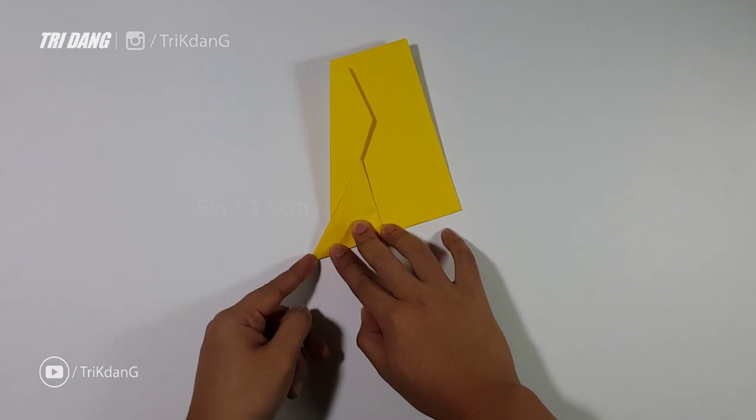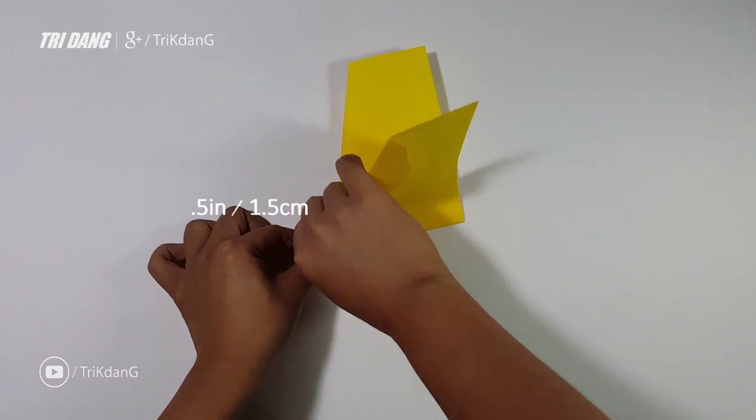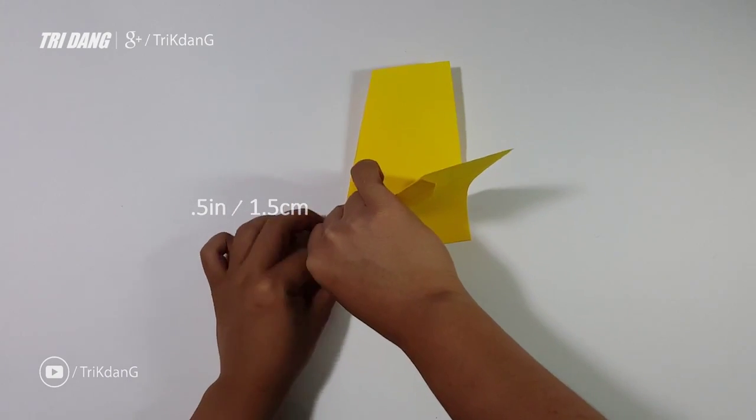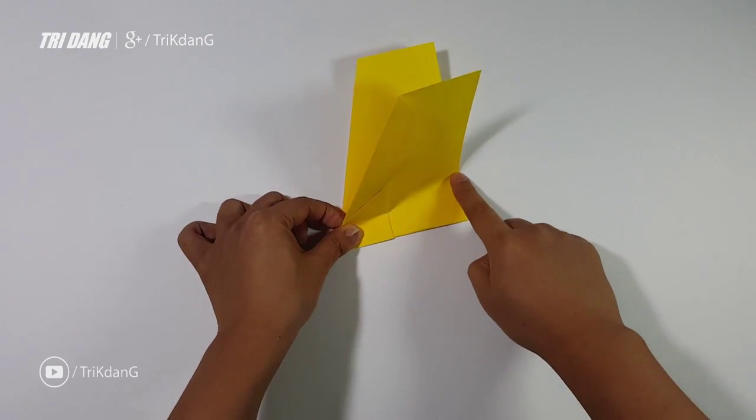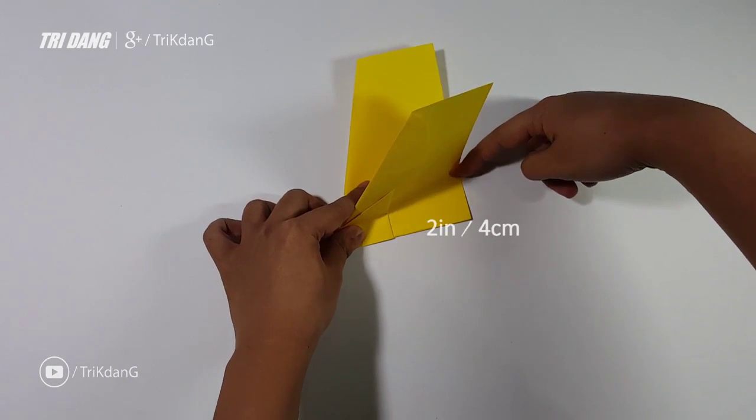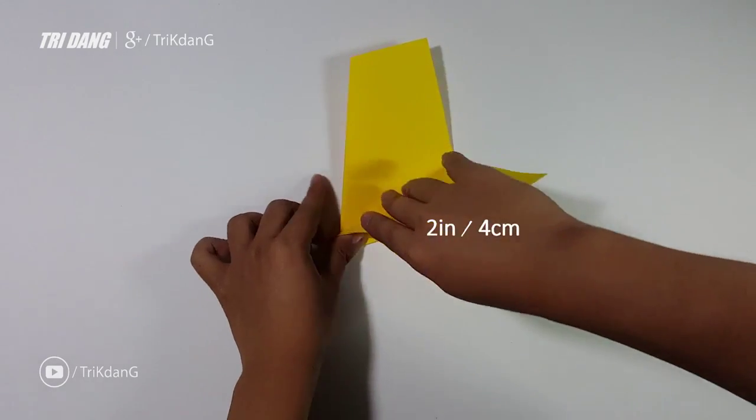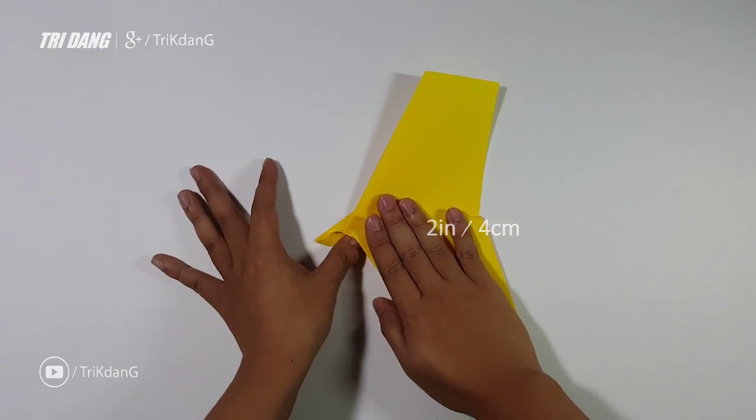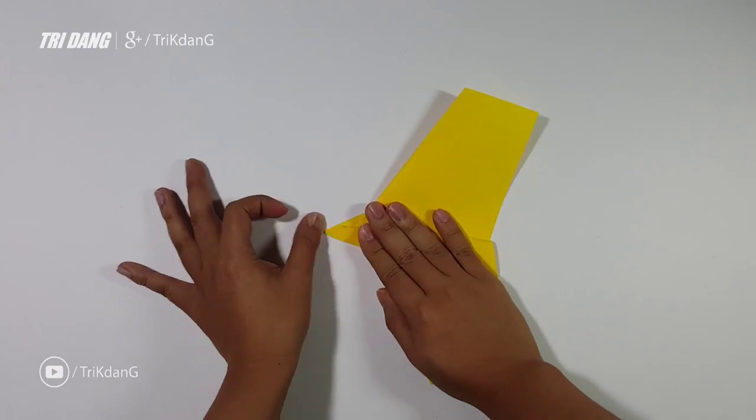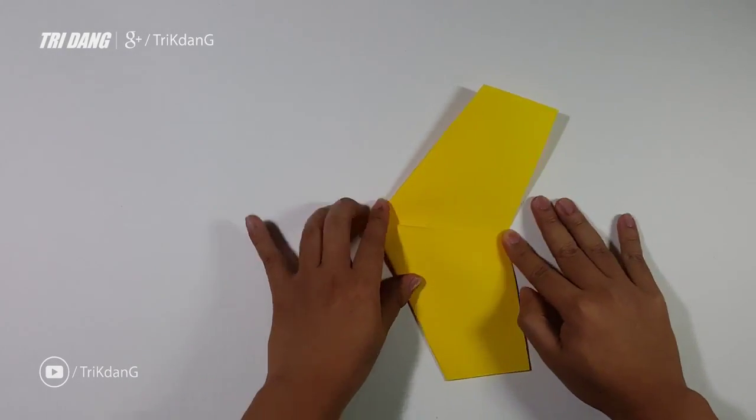And now, I will estimate about half an inch from the tip here along this edge, and I will fold straight up. You can see the bottom here is about 2 inches. And I repeat the same fold for the other side as well.